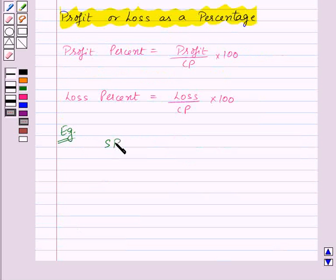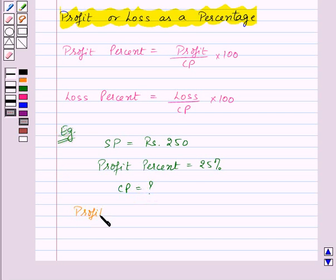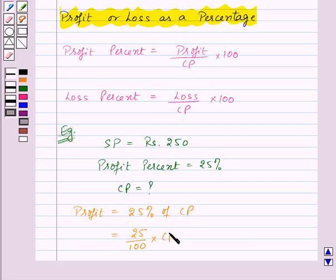Suppose we are given that the selling price of an article is Rs. 250, profit percent is 25%, and we need to find the cost price of the article. For this, first of all, we know that profit is equal to 25% of cost price, which is equal to 25/100 × cost price.